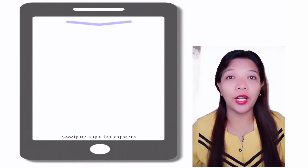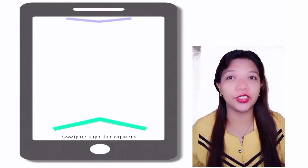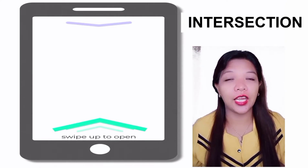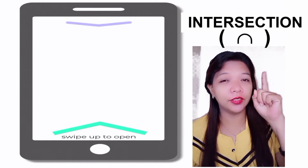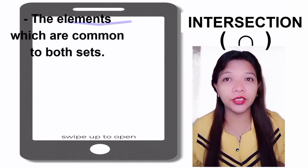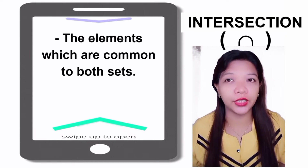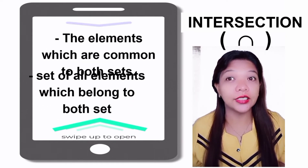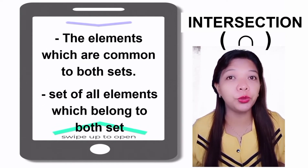Now let's proceed to Intersection. This is the intersection symbol. Intersection refers to the elements which are common to both sets — it is the set of all elements which belong to both sets.